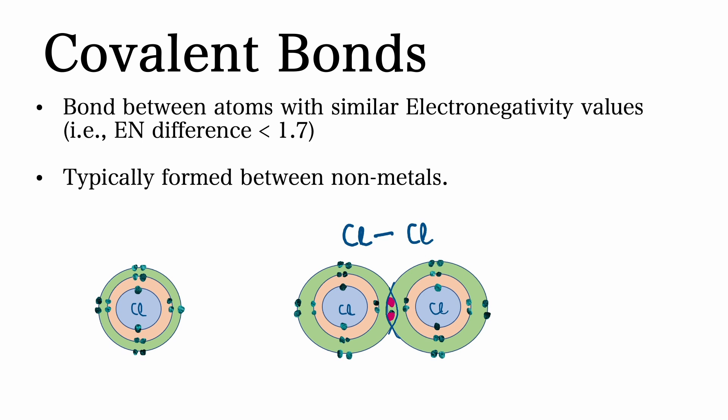Covalent bonds, on the other hand, form between atoms with an electronegativity difference less than 1.7. Thus, they are typically formed between nonmetals. For example, chlorine molecules are formed through covalent bonds. As you can see, the formation of these bonds are facilitated through the sharing of electrons.